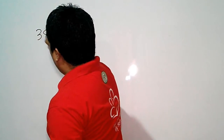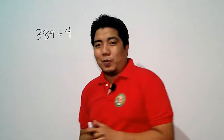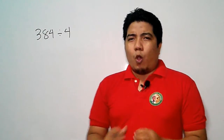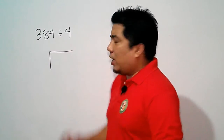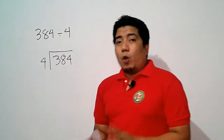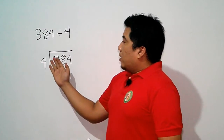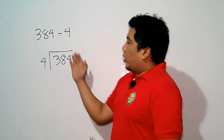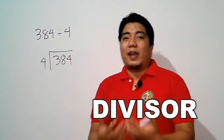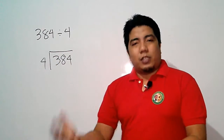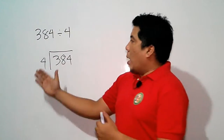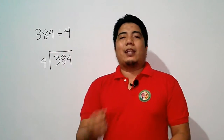Say we have an example: 384 divided by 4. Now these are both whole numbers. When we use the long division method, we can determine the parts of division. The number inside the semi-box is what we call the dividend, while the number outside the semi-box is what we call the divisor. The answer we get is called the quotient, and if the dividend is not divisible by the divisor, we get a remainder.